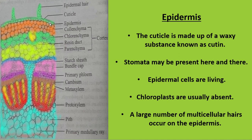Stomata possess guard cells, which are surrounded by the epidermal cells. The stomata play an important role in gaseous exchange. The epidermal cells are living, as parenchyma cells and collenchyma cells are living in nature, whereas sclerenchyma cells are dead cells.